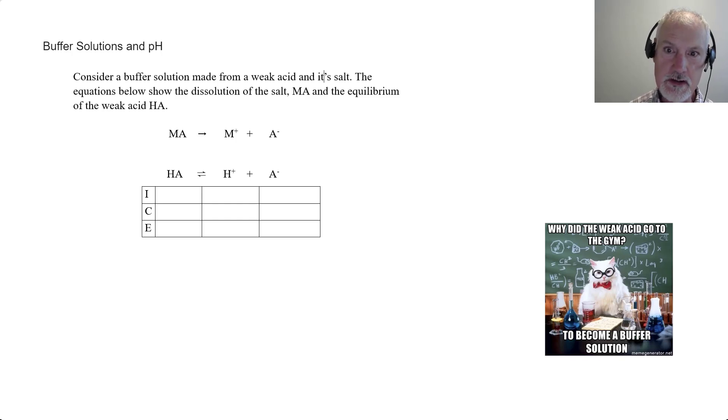It can be made from a weak acid and its salt or a weak base and its salt. The equations below show the dissolution of the salt MA. We start with some concentration of a salt that dissociates 100% into M+ cations and A- anions. Because it dissociates 100%, the initial concentration of our salt is going to be equal to the initial concentration of our anion.